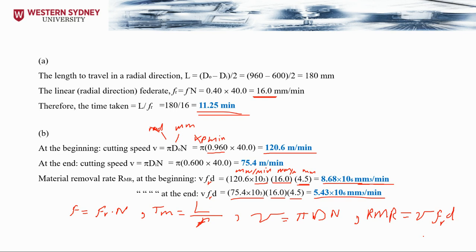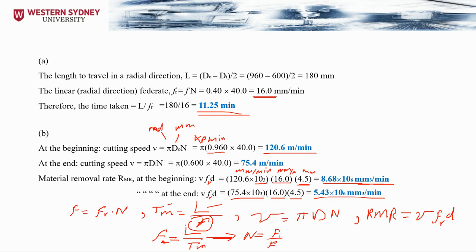The key equations to remember: the linear feed rate equals the rotational feed rate multiplied by the RPM value; the machining time Tm equals L divided by the feed rate; the cutting speed equals π × D × RPM; and the material removal rate equals V × linear feed rate × depth of cut. You can rearrange these — for example, if given L and Tm, find feed rate as L/Tm, then RPM = feed rate / rotational feed rate.